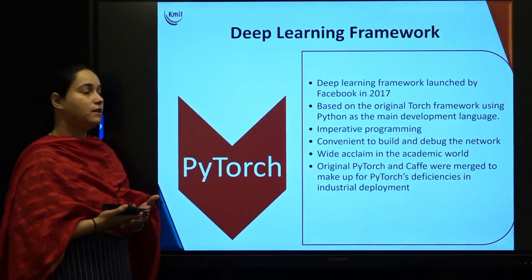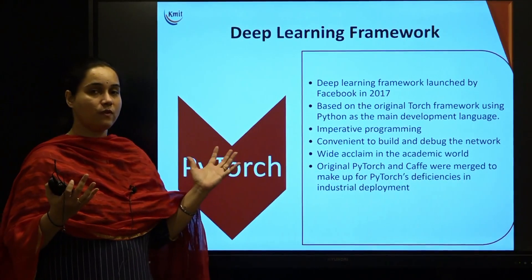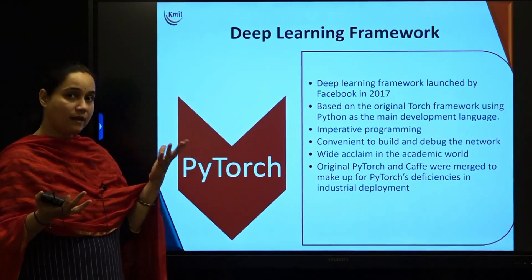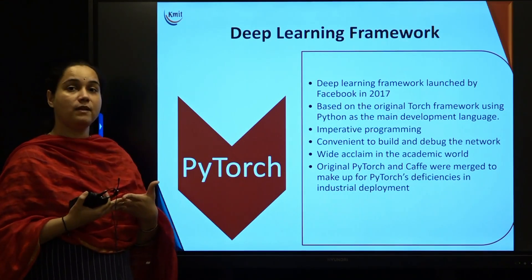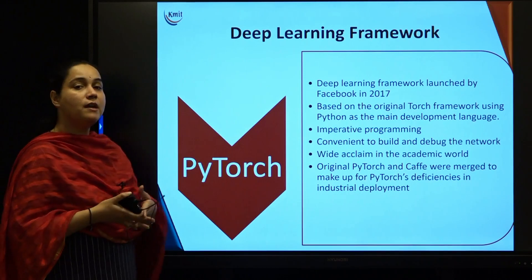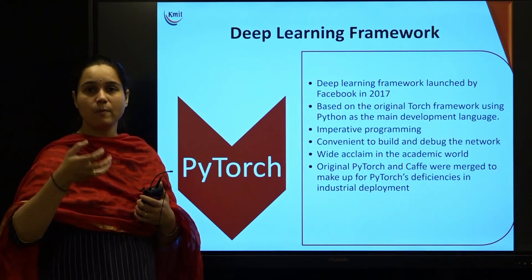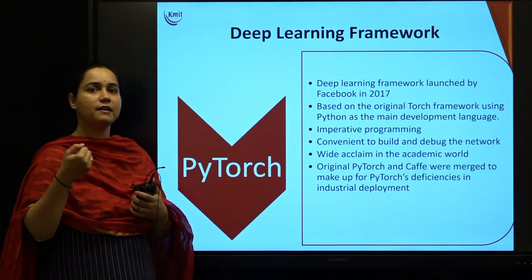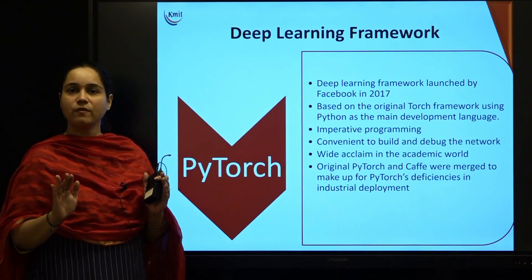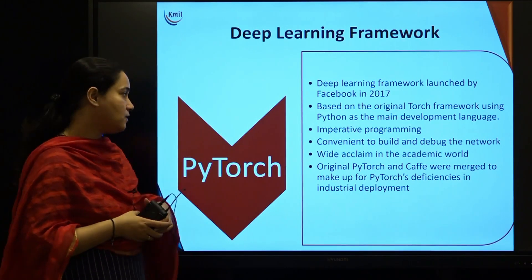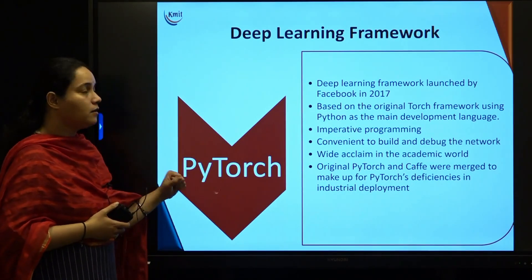PyTorch is very convenient to build and debug network models. The second version of Caffe, originally useful for convolutional neural networks, was merged with PyTorch, which helped overcome all the deficiencies of PyTorch. Although PyTorch was popular with academics, it was lagging in industrial deployment. After the Caffe and PyTorch merger, it removed those deficiencies and started making its position in industry as well. PyTorch is a very important framework you will be learning.